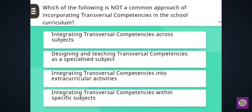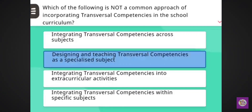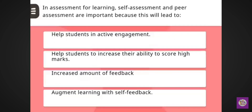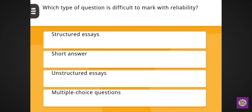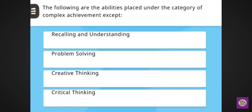Next question: Which of the following is not a common approach of incorporating transversal competences in the school curriculum? Correct answer: designing and teaching transversal competences as a specialized subject. Next question: In assessment for learning, self-assessment and peer assessment are important because this will lead to — correct answer: augment learning with self-feedback. Next question: Which type of question is difficult to mark with reliability? Correct answer: unstructured essay.